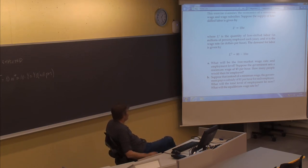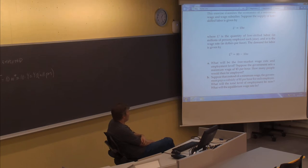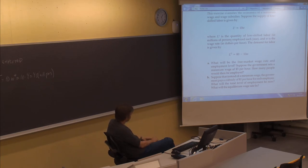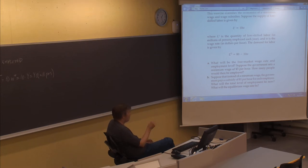Question B: suppose that instead of a minimum wage, the government pays a subsidy of $1 per hour for each employee. So instead of mandating a salary of $5, they decide to make it $1 cheaper for the firms — the demanders. What will the total level of employment be now? What will the equilibrium wage rate be? So now we do something different — we try to regulate this market by adding a subsidy, putting money in, instead of saying you have to pay $5.